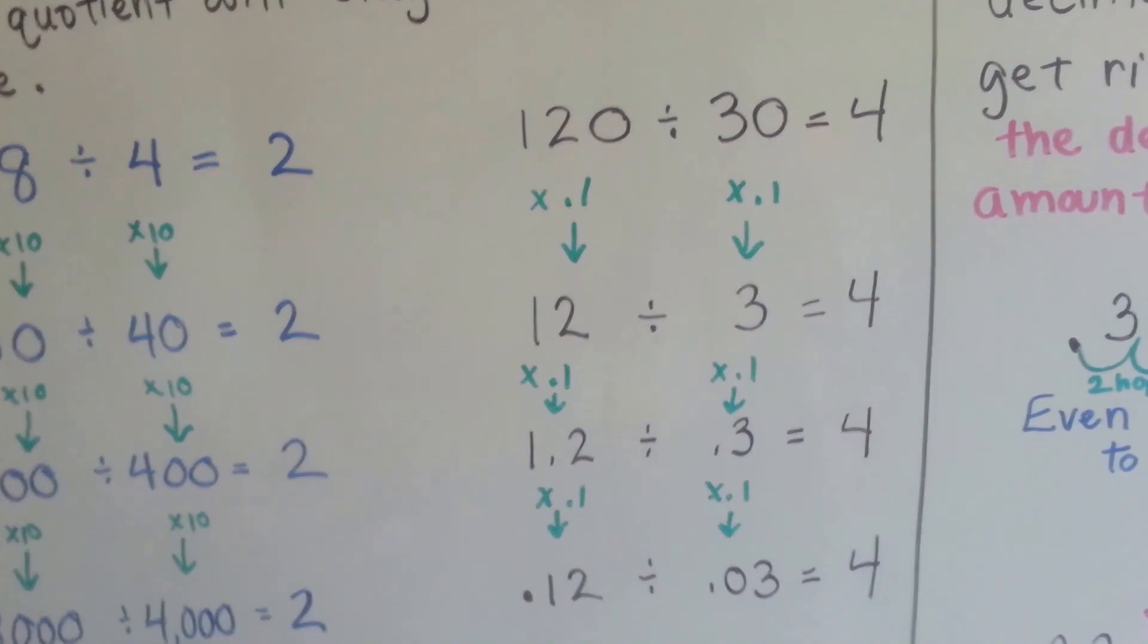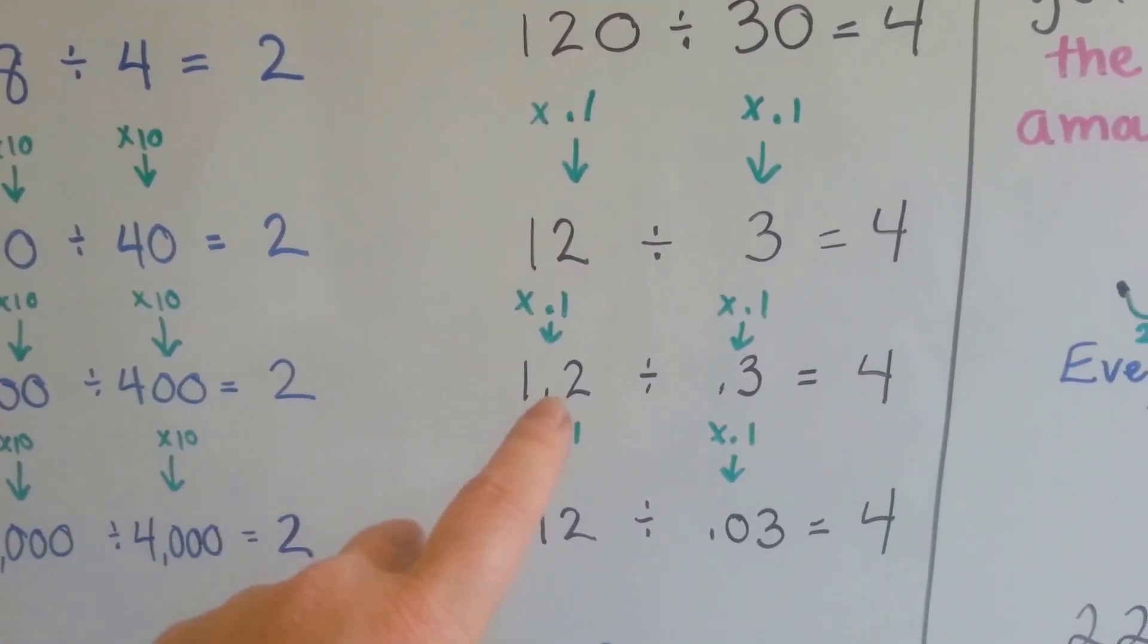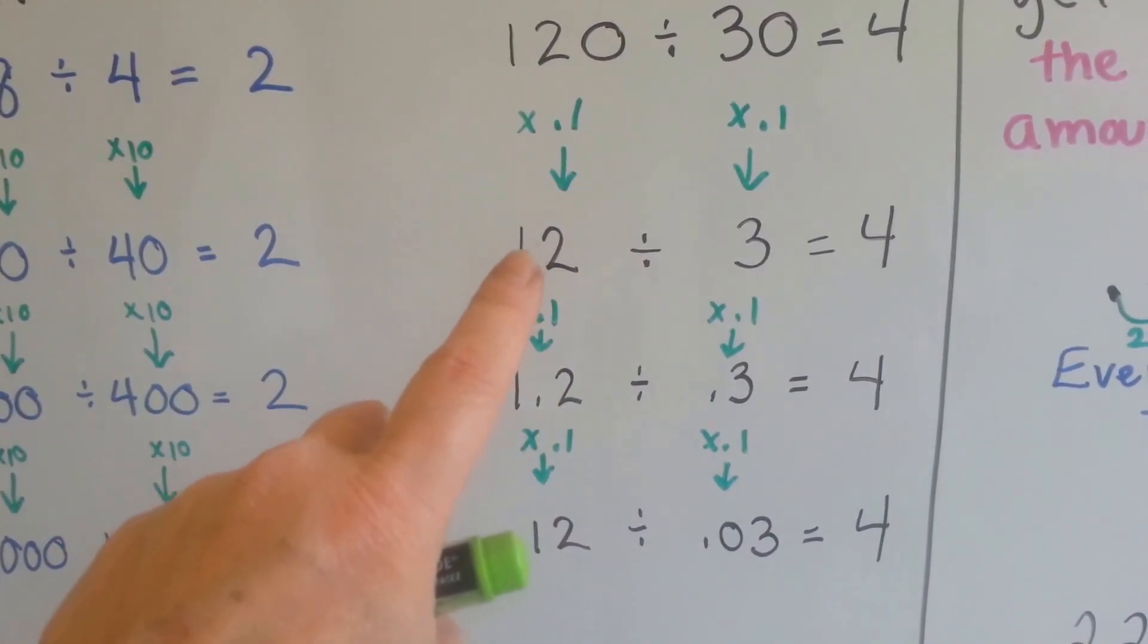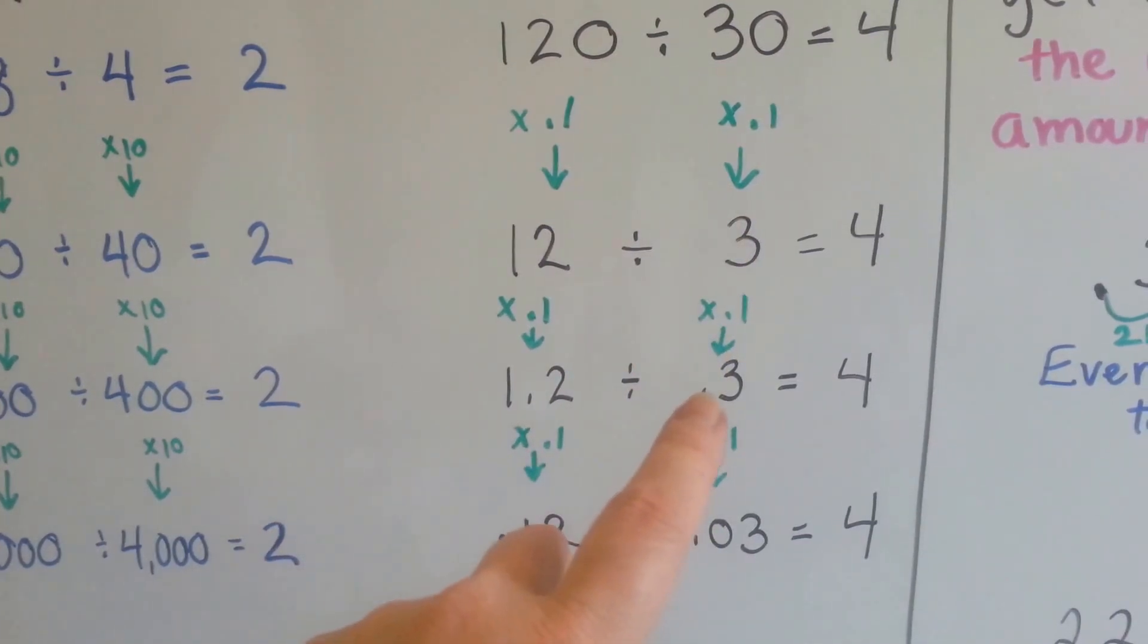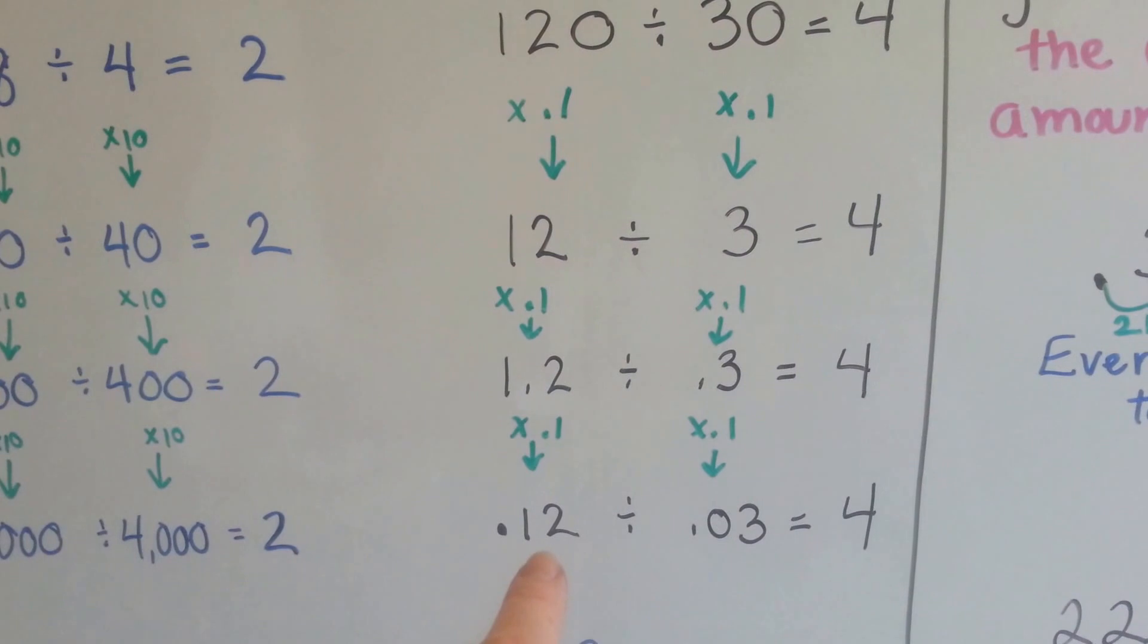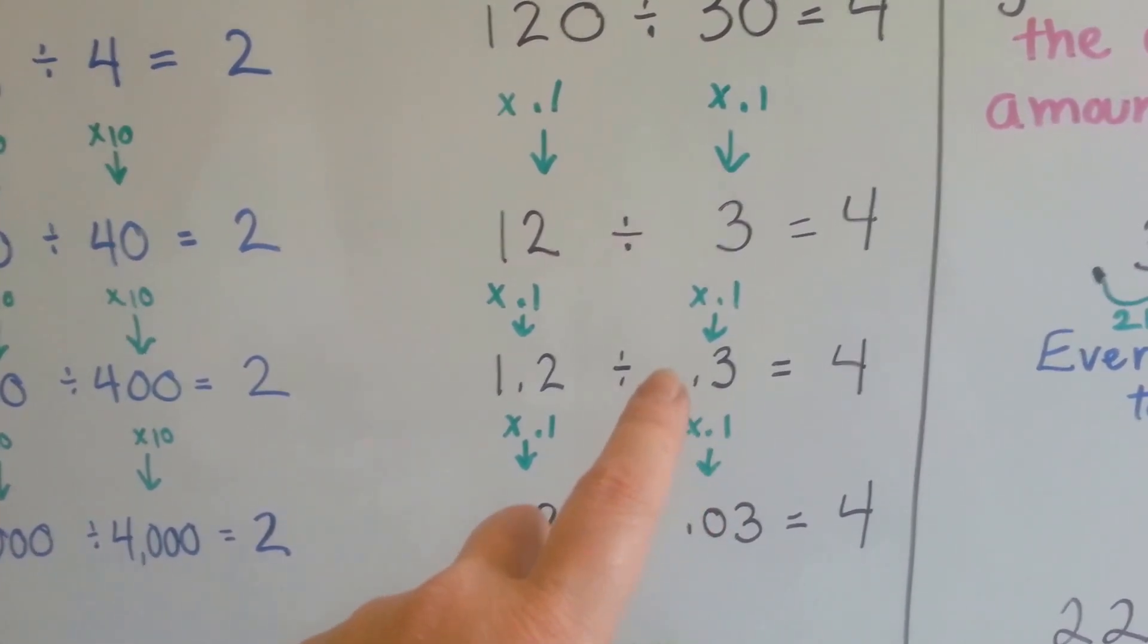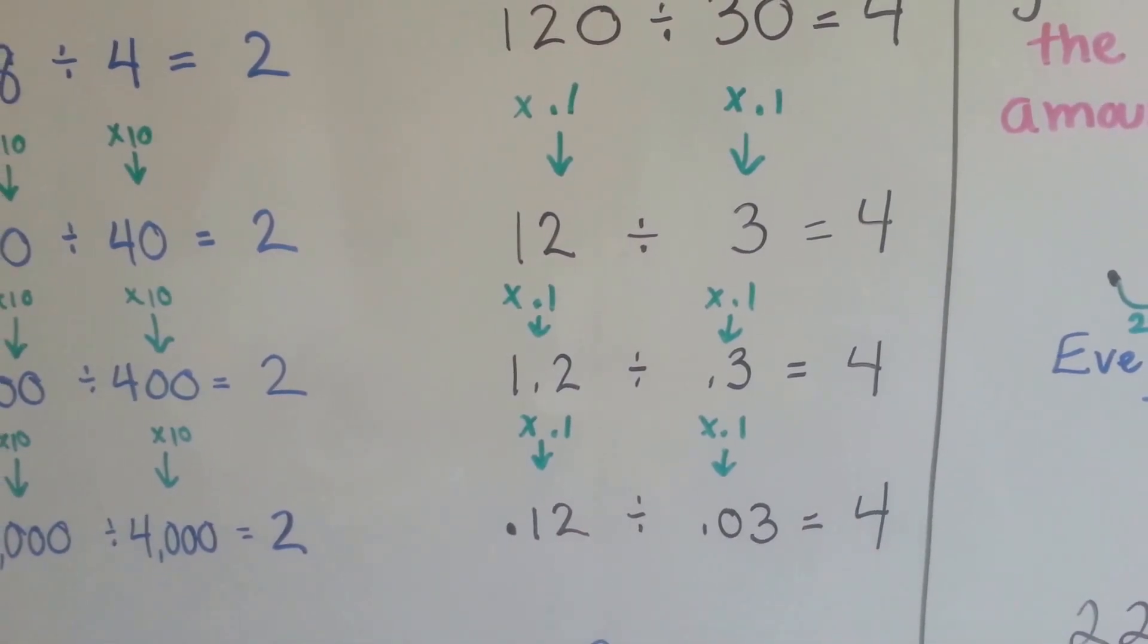12 divided by 3 is 4. If we multiply it by another tenth, it's going to move the decimal point another space over. So instead of 12, we've got 1 and 2 tenths. Instead of 3, we have 3 tenths, but the answer is still 4. If we multiply it by another tenth again and move the decimal point one more time, so now we have 12 hundredths, and we multiply this by a tenth and move the decimal point over to the left one more time, so we have 3 hundredths, the answer is still 4.